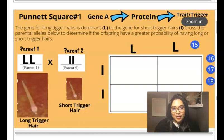So the trait we're going to focus on is the length of the trigger hair. The gene for long trigger hair is dominant, represented by a capital L, compared to the gene for short trigger hair, which is lowercase l.